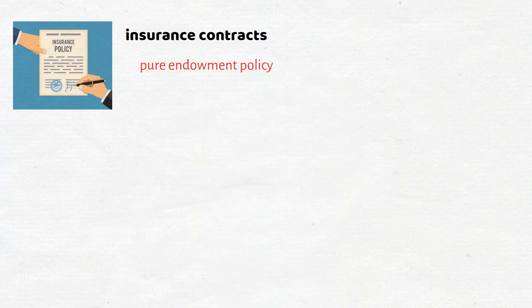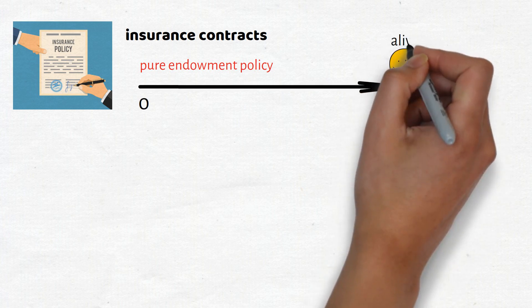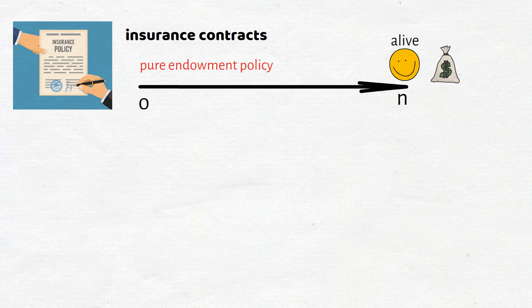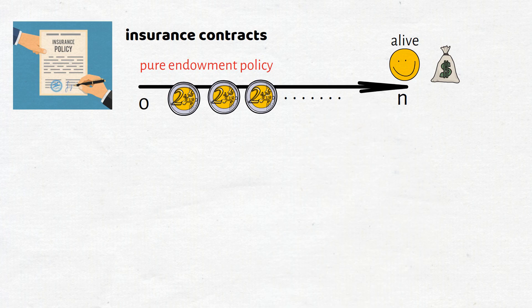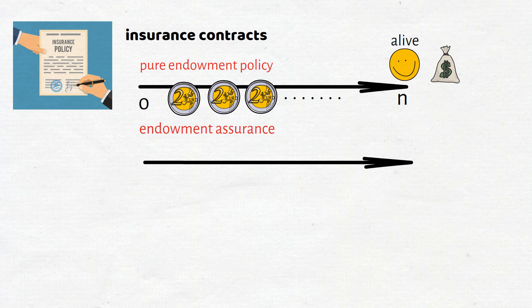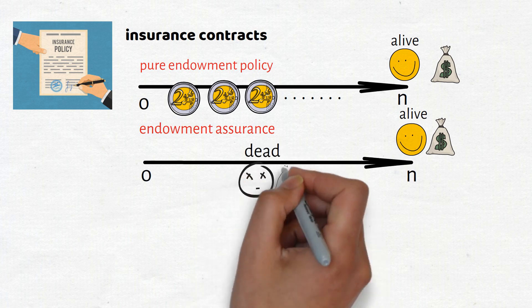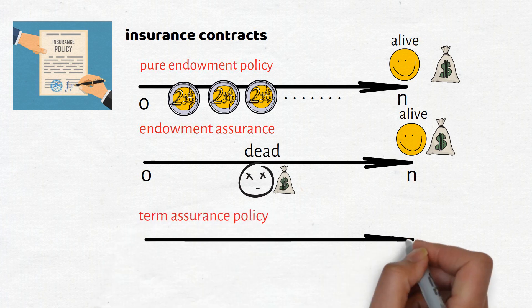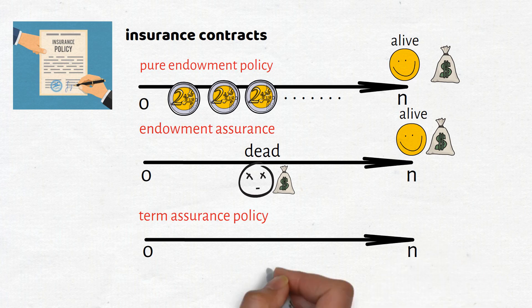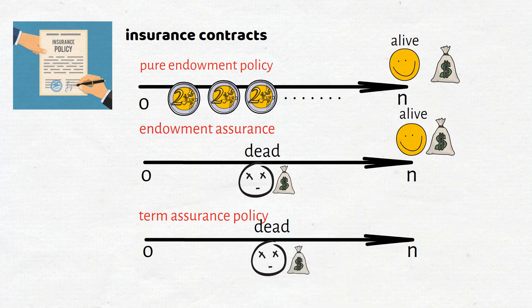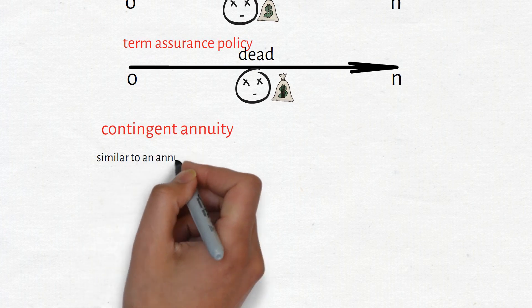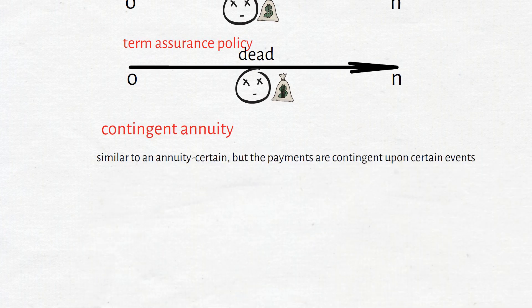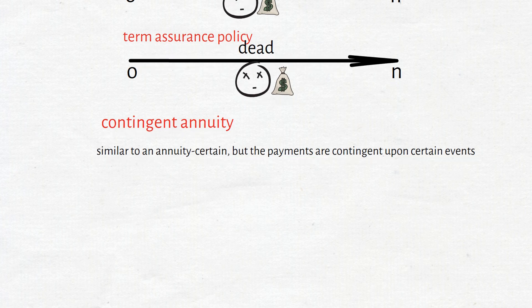Now looking at insurance policy contracts: a pure endowment policy pays a lump sum amount upon survival to the end of a specified term and requires regular premium payments. An endowment assurance is similar to a pure endowment but also pays a lump sum benefit on death before the end of the term. A term assurance policy provides a lump sum benefit upon death before the end of a specified term and also requires regular premium payments. A contingent annuity is similar to an annuity but the payments are contingent upon certain events, such as survival, which makes the payment term and regular cash flows uncertain.